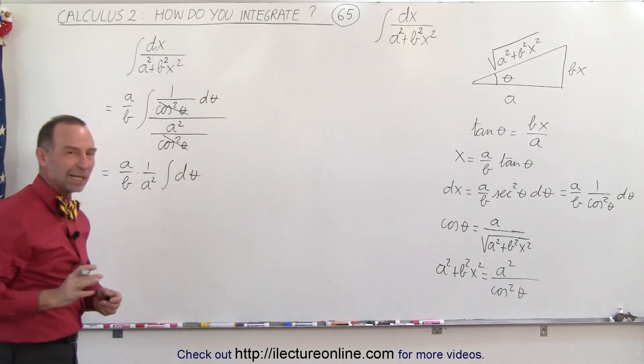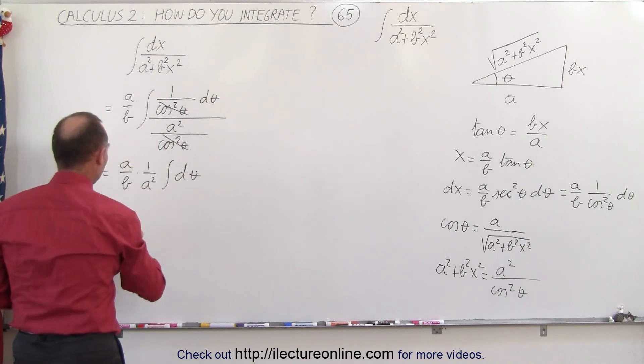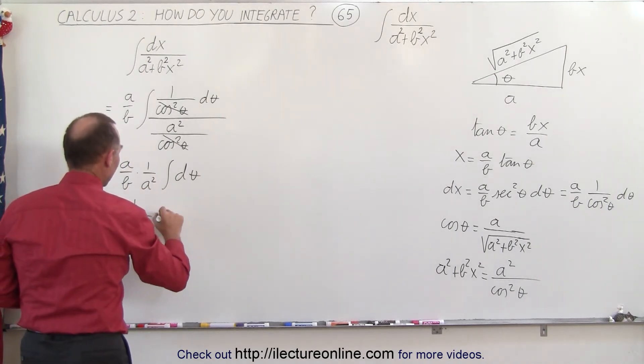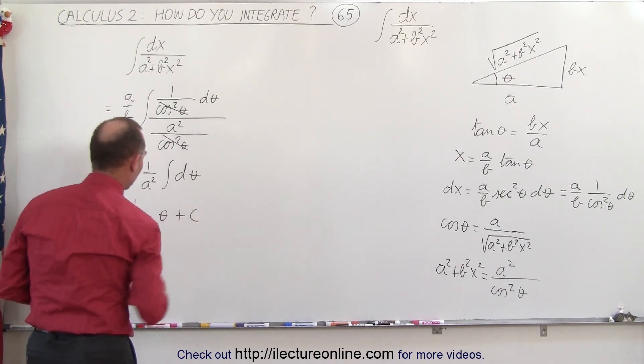And of course, that's a really easy integral to integrate. So we can cancel out the A, so this becomes equal to 1 over AB times theta plus a constant of integration.